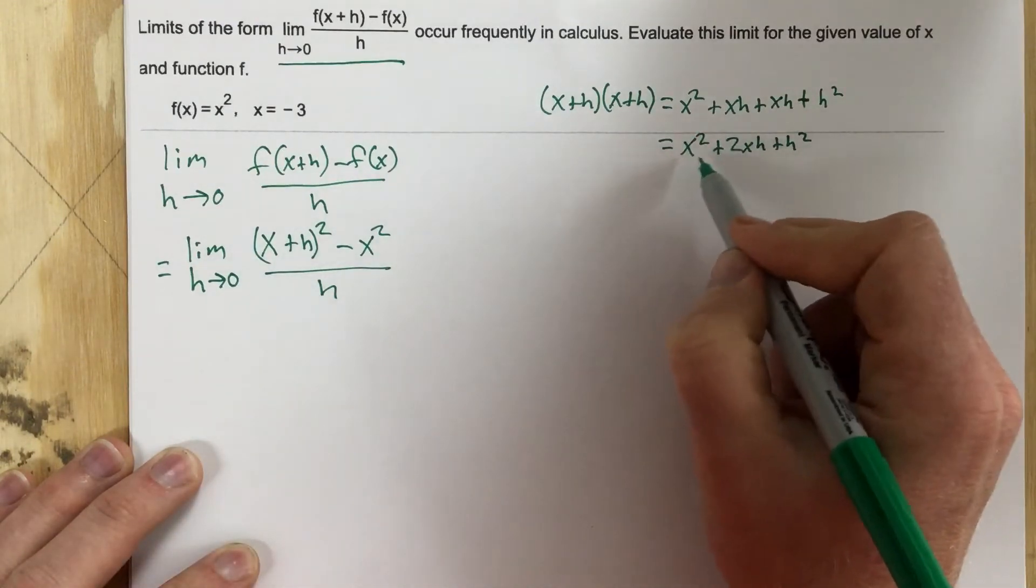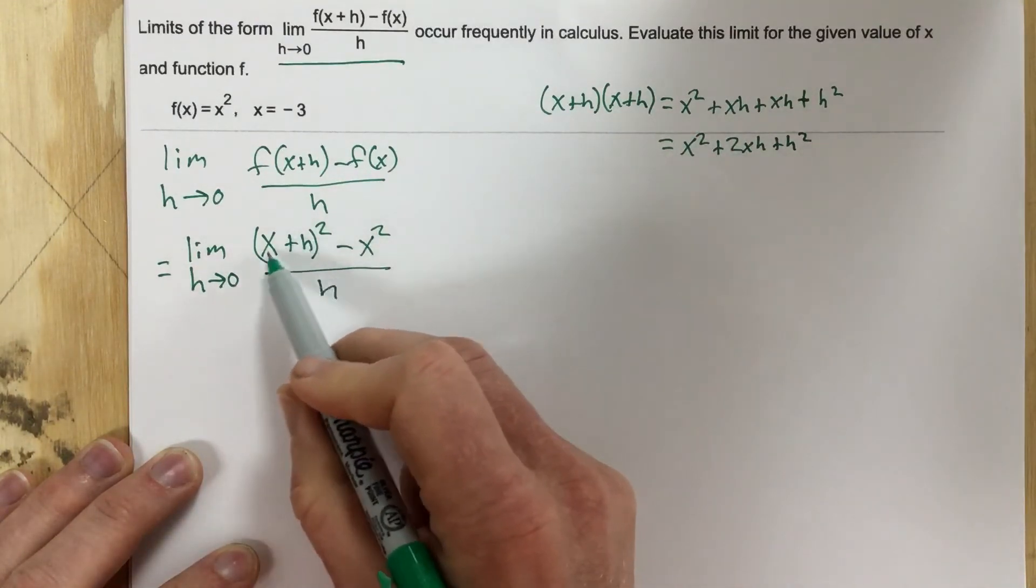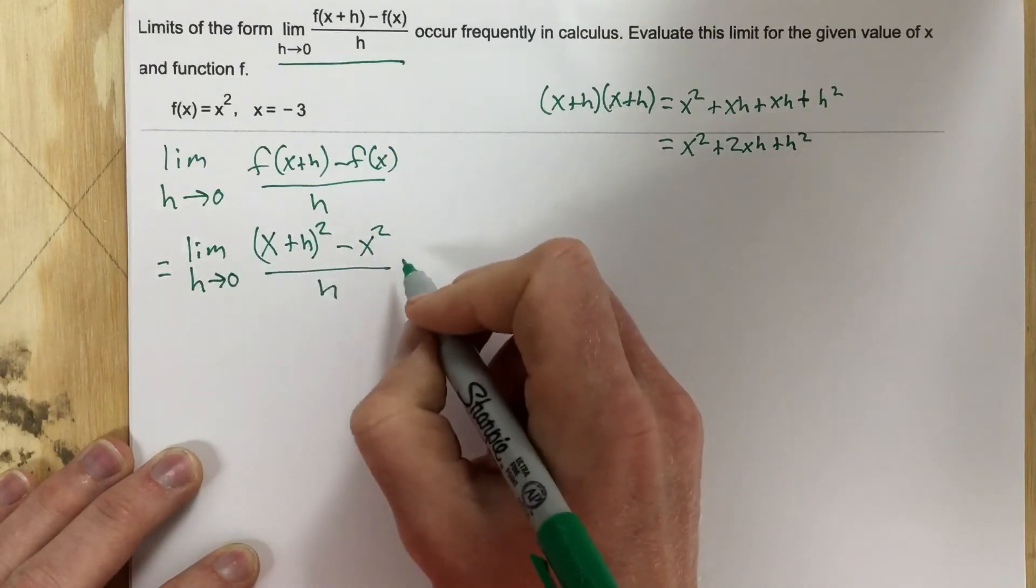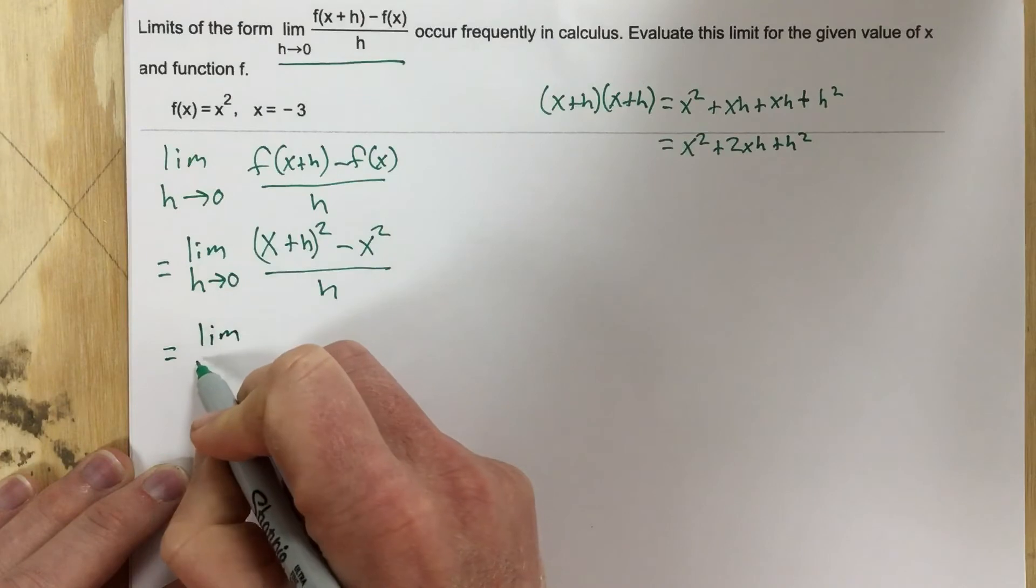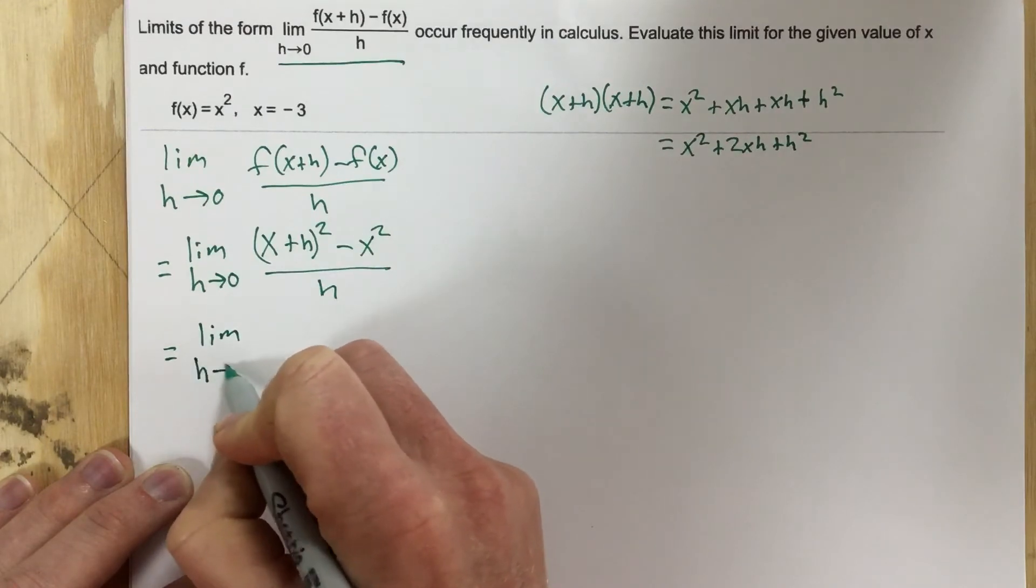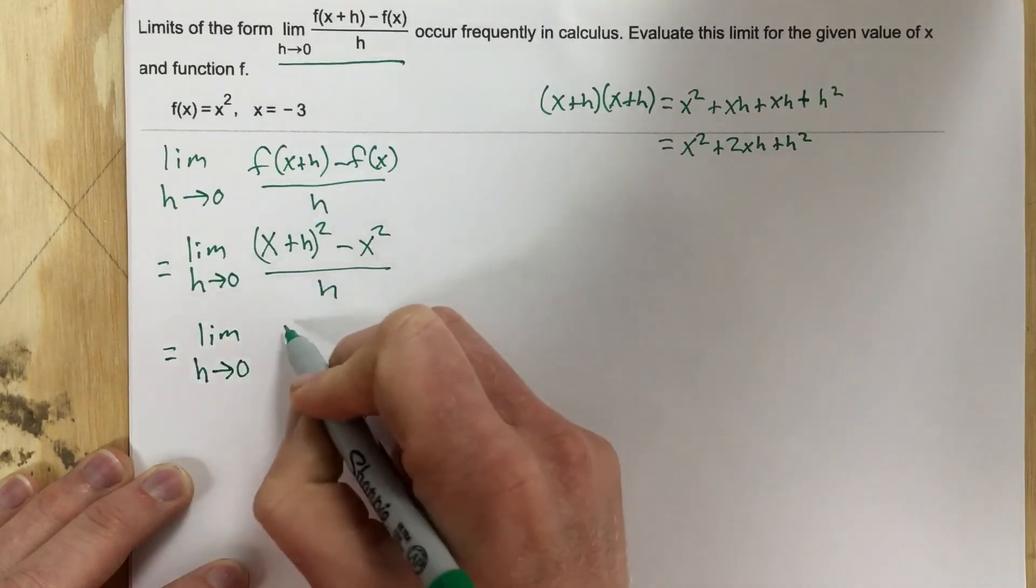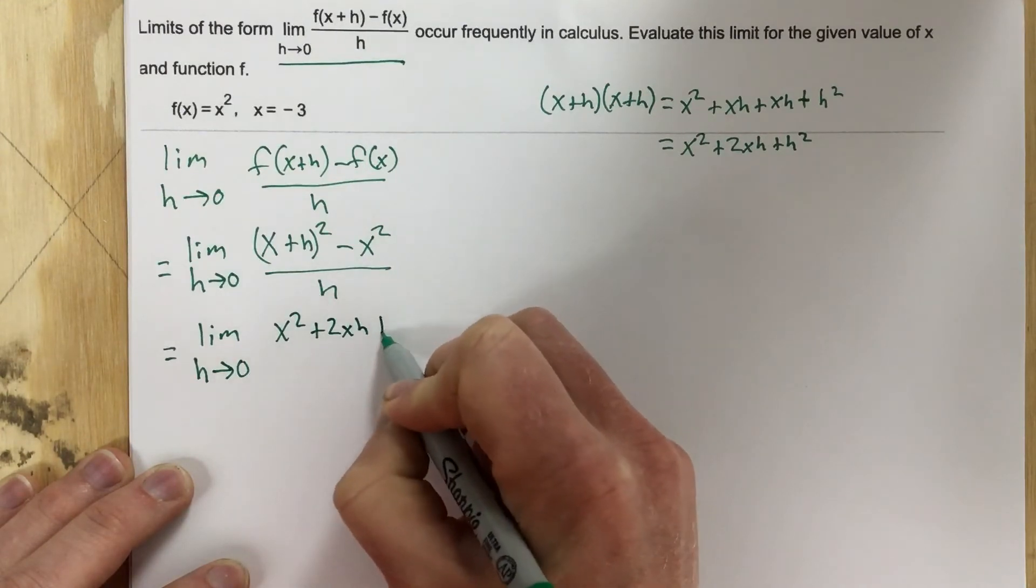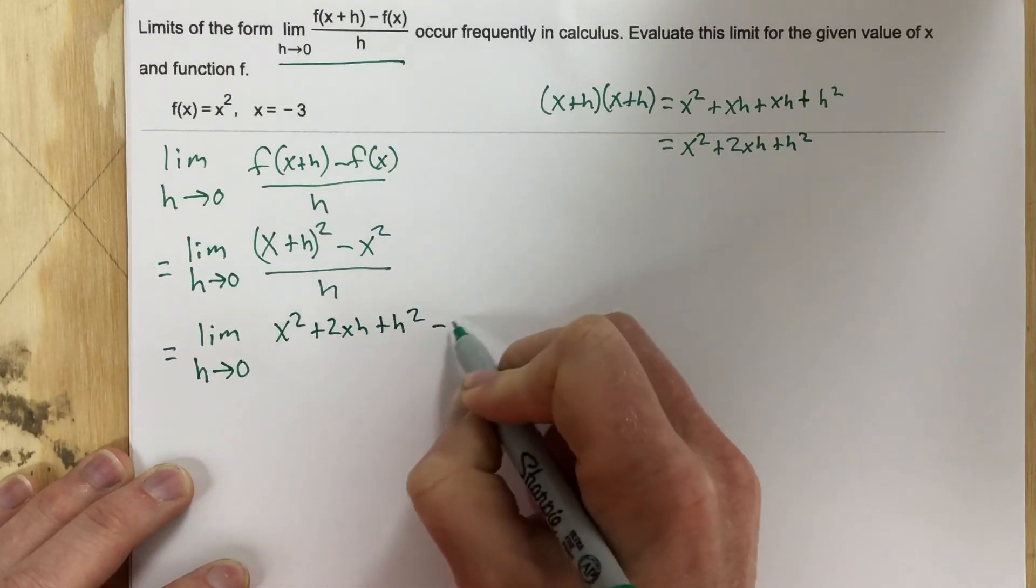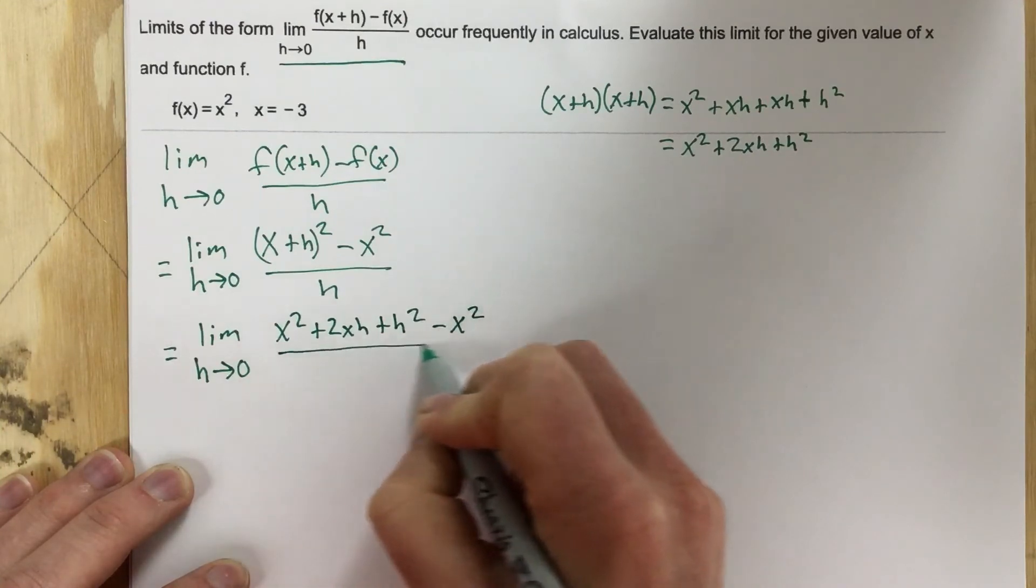Now I'm going to take this and plug it in for x plus h squared. You end up with equals limit as h approaches 0, x squared plus 2xh plus h squared minus x squared, all over h.